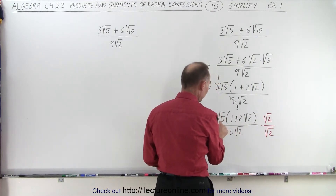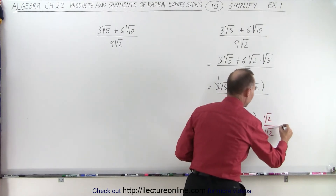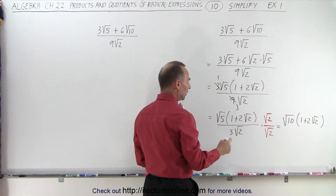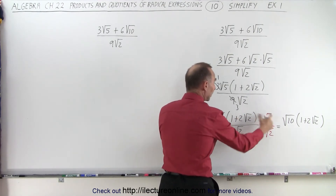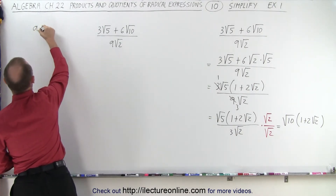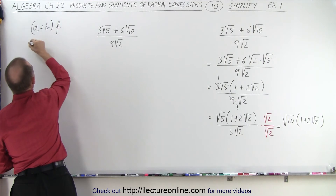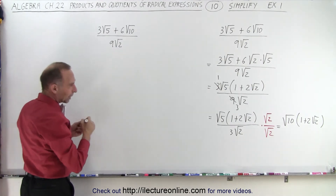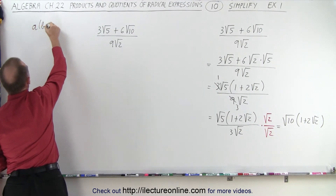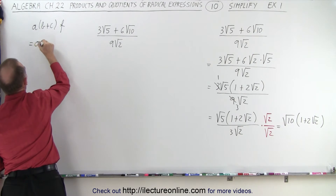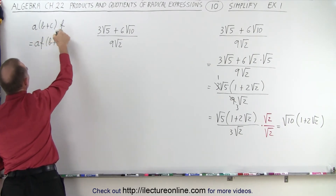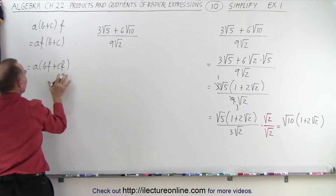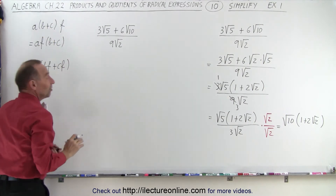When we multiply the numerator, the square root of 5 times the square root of 2 is simply the square root of 10. So this equals the square root of 10 times (1 plus 2 times the square root of 2). We only multiply the square root of 2 by the square root of 5 once — because if we have A times (B plus C) multiplied by F, this equals A times F times (B plus C), or A times (BF plus CF). We multiply either A with F, or what's inside the parentheses, but not both.